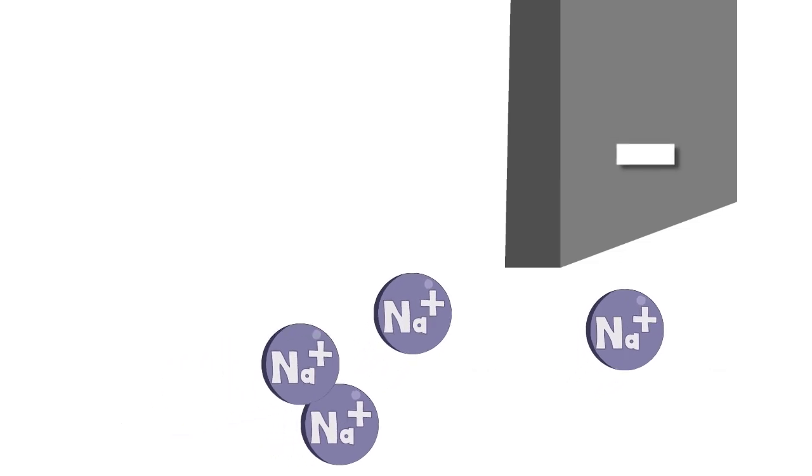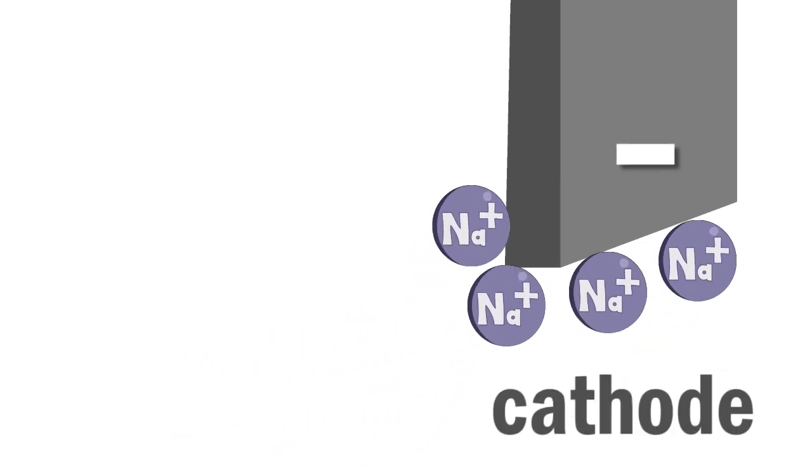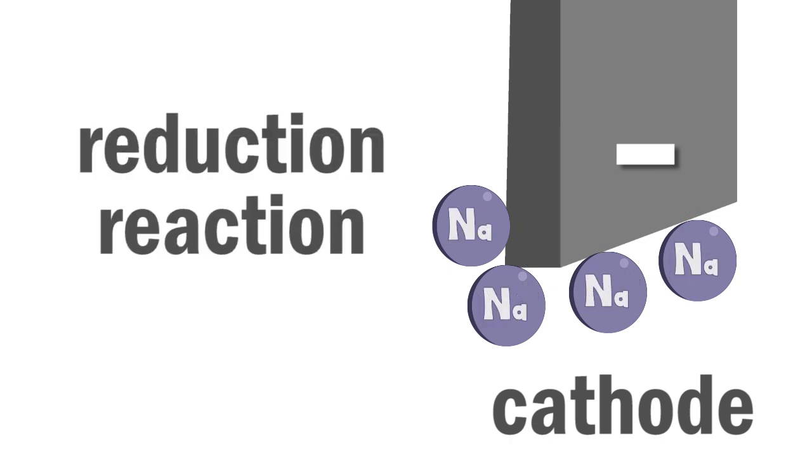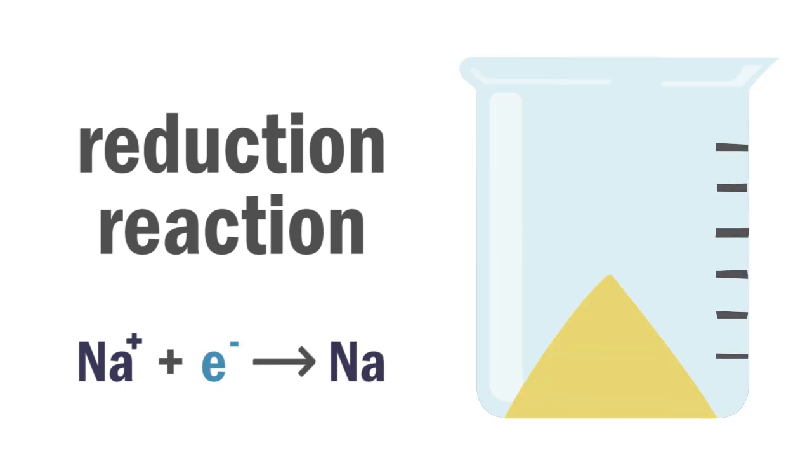Sodium ions will be attracted to the negative electrode, the cathode, where they combine with electrons to give sodium atoms. This is a reduction reaction. Each ion gains one electron and sodium metal is produced.